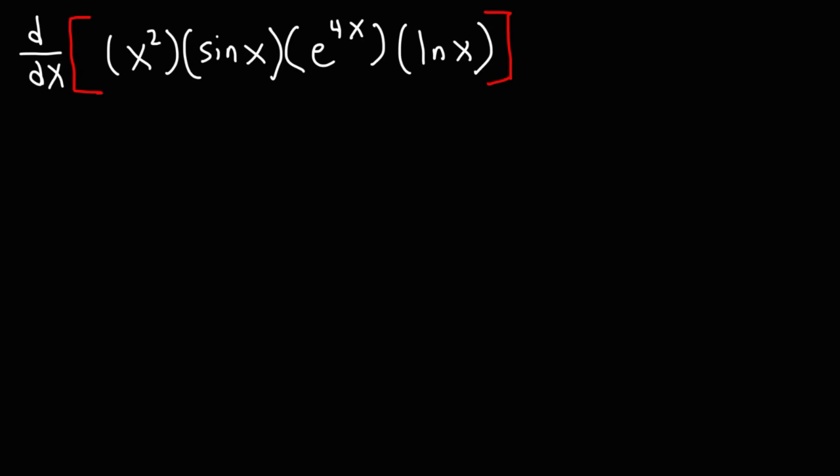Consider this problem: what is the derivative of x squared times sine x times e to the 4x times the natural log of x? So we have a product of four terms. How do we find the derivative of that?